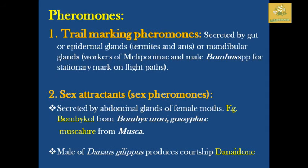The first type of pheromone is trail mark pheromones, secreted by gut or epidermal glands, mainly in termites, and by mandibular glands in workers of meliponine bees and male bumblebee species. Sex attractant pheromones, also known as sex pheromones, are secreted from abdominal glands of female moths — for example, bombykol from Bombyx mori, and various chemicals secreted by other insects including Musca, RCTP, and others.